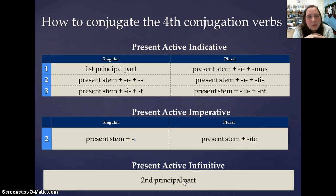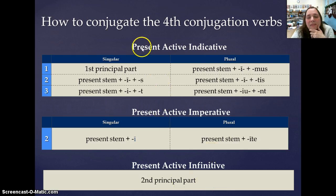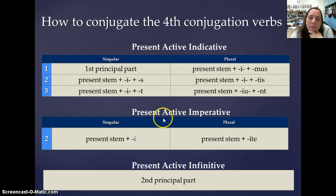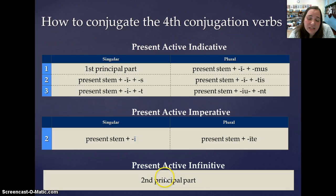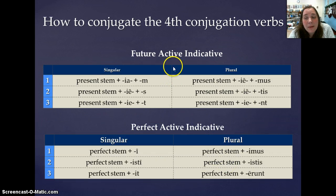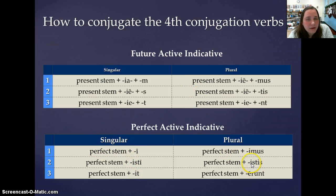Fourth Conjugation is going to look pretty much identical to the Third IO. In the Present Active Indicative, the only difference is a couple of macrons, and they're not important macrons so I'm not making you memorize them. In the singular imperative — this is one of two ways in which Third IO and Fourth Conjugation differ. The Third IO has an E in the singular imperative; Fourth has a long I. The plural is still -ite, and the present active infinitive is still the second principal part. The future and the perfect are exactly the same.